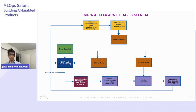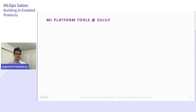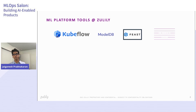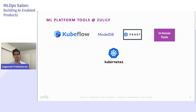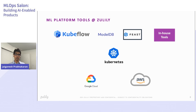With this understanding of ML workflow, let us take a look at some of the tools we use internally within Zulily to build the machine learning platform. We use Kubeflow, ModelDB, Feast, and a few in-house tools. One thing to note is that all of these tools are deployed on Kubernetes, which allows us to scale very easily. We use a multi-cloud environment to support our machine learning workloads — we train our models on GCP, that's Google Cloud Platform, and we serve our models on AWS.